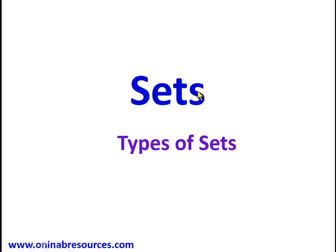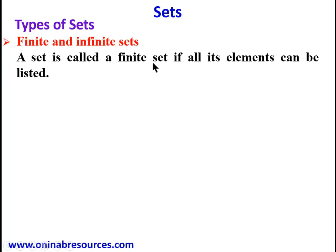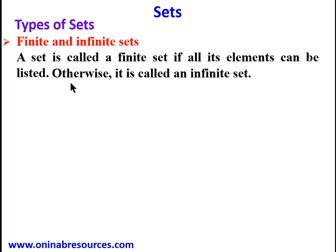Hello, welcome to this tutorial. In this video we'll be looking at types of sets. We start with finite and infinite sets. A set is called a finite set if all its elements can be listed — that is, if it has a finite number of elements. Otherwise it is called an infinite set, if we cannot list all the elements contained in a particular set.